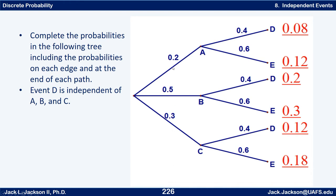The first-level branches must add up to 1. We already have 0.3 and 0.2, which sum to 0.5, so P(B) is 0.5. Now, since P(A intersect D) = 0.08 and P(A) = 0.2, we divide: 0.08 divided by 0.2 gives P(D) = 0.4. Check: 0.2 times 0.4 is 0.08. And since D and E must sum to 1, P(E) = 0.6.